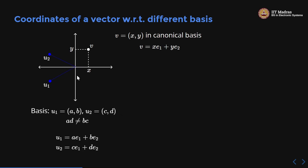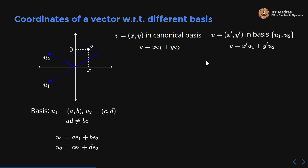Since ad ≠ bc, u1 and u2 are linearly independent — they cannot form a basis otherwise. So u1 = (a, b) and u2 = (c, d). I know that u1 = a·e1 + b·e2 and u2 = c·e1 + d·e2 — I have written u1 and u2 in terms of the canonical basis. Now the same vector v may have some other coordinates (x', y') when expressed in the basis u1, u2.